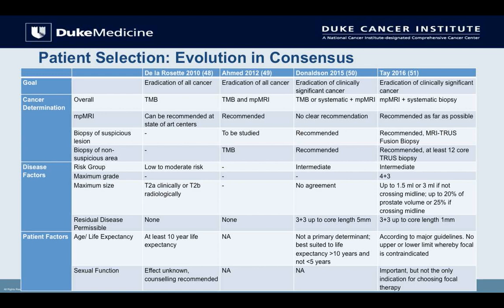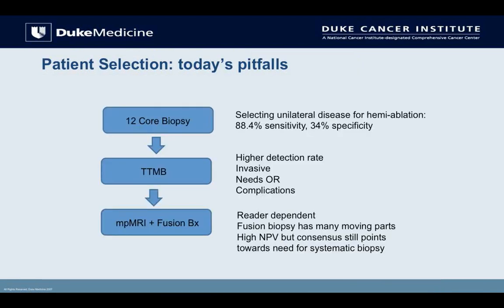Regarding residual disease: back in 2010, we didn't really tolerate any. But now we're much more comfortable with active surveillance, and we think it's okay to watch some Gleason 6 — maybe even a couple millimeters of Gleason 7 in select cases. Life expectancy follows the major guidelines, and sexual function preservation is important, though that's not the only reason for doing focal therapy. A pitfall today in patient selection is the 12-core biopsy.